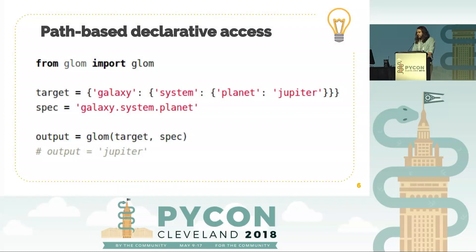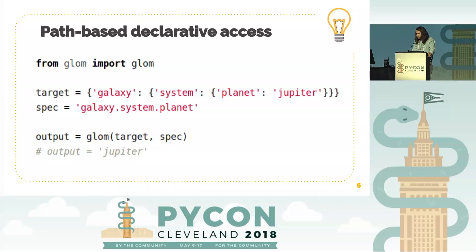First up, I think this is maybe the most common case. Basically, it gives you a dotted syntax for reaching into dictionaries. Here we have a target: galaxy, system, planet, Jupiter. Not a great structure for the data, but with Glom it's no problem — you can just move straight ahead.